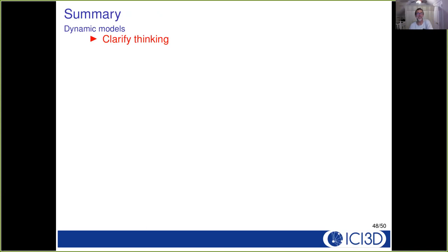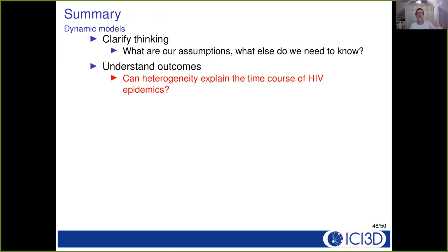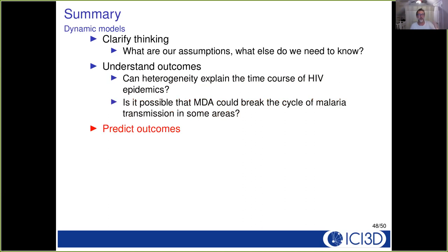Going back to the theme of MMED, dynamic models have a huge number of possible roles in this. We use dynamic models simply to clarify thinking. If we can make a dynamical model, that means we've thought out our model world pretty well, and if we haven't, if we can't finish making a dynamical model, it can simply help us ask the right questions. Dynamic models can help us understand outcomes. Is heterogeneity enough to explain the time course of HIV epidemics? When we studied the Harari data, we found out, no, it's not, but it is necessary. You can't really even begin to get near realistic HIV epidemics without heterogeneity. Is it possible that mass drug administration could break the cycle of malaria transmission in some areas? The battle against malaria has been very complicated and multi-fronted, but this still seems like an interesting and not completely closed question.